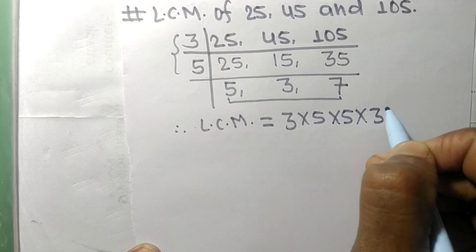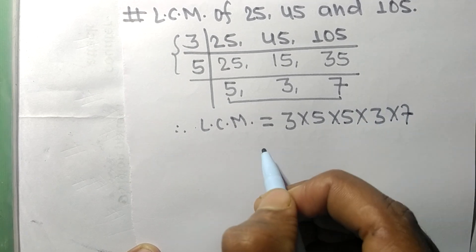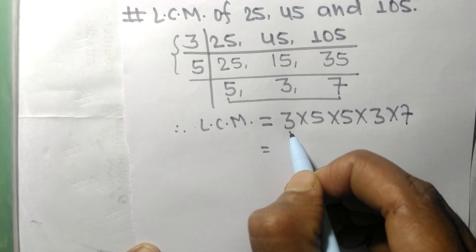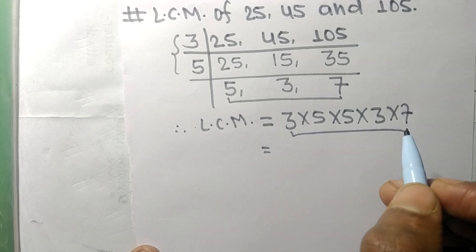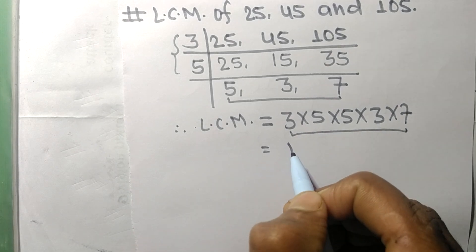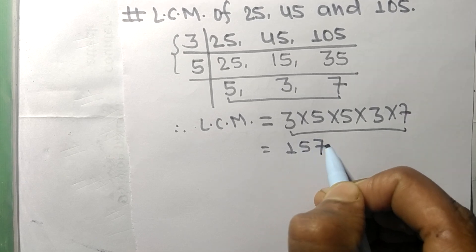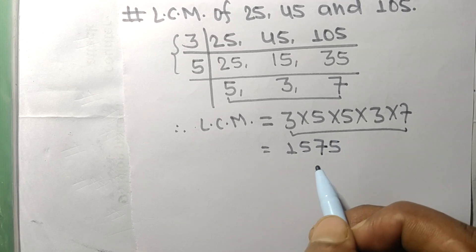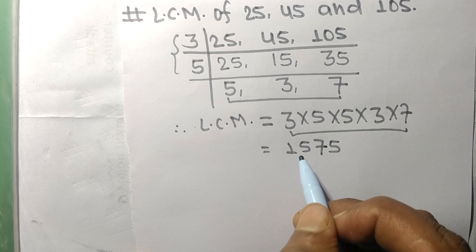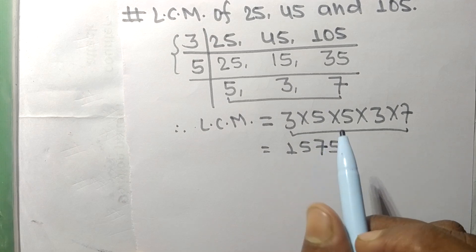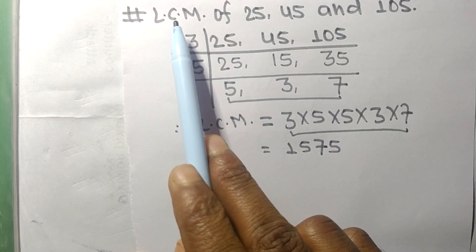So by multiplying all these numbers, we get 1575. Therefore, 1575 is the LCM of 25, 45, and 105.